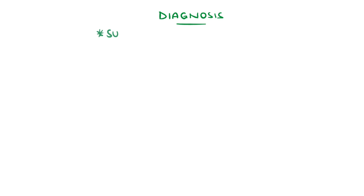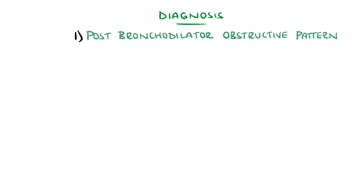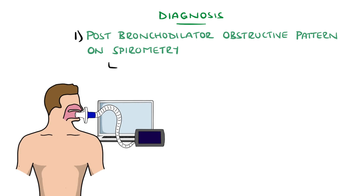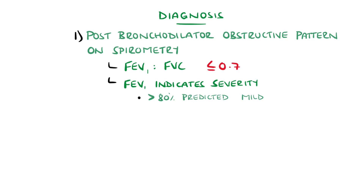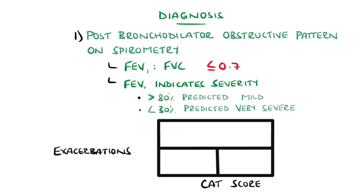Diagnosis is suspected from the clinical history, but is made by demonstrating the presence of an obstructive pattern on spirometry that is irreversible. The Global Initiative for COPD, known as GOLD, criteria include a post-bronchodilator forced expiratory volume in one second to forced vital capacity ratio of less than 0.7. The FEV1 can also be used to indicate the severity of obstruction, with more than 80% of predicted value being the mildest form, while less than 30% indicates very severe COPD. The COPD Assessment Test, known as the CAT score, can be used to assess symptom severity. The number of exacerbations in the past can help predict future exacerbation risk.